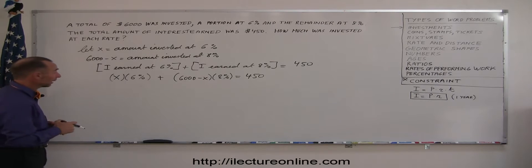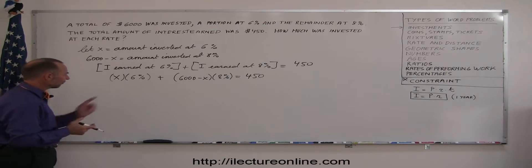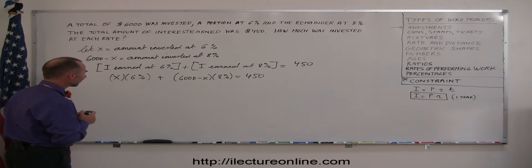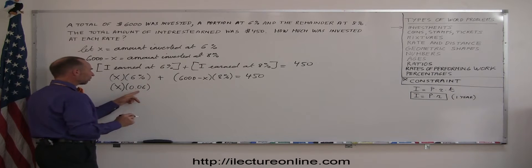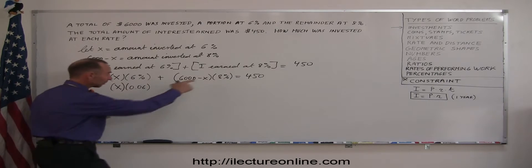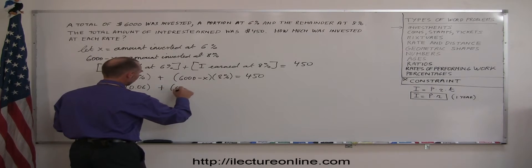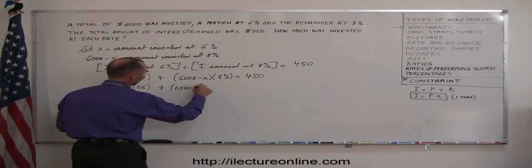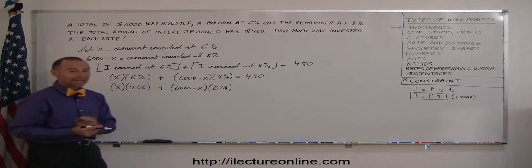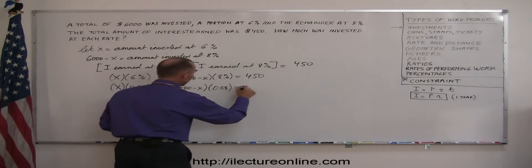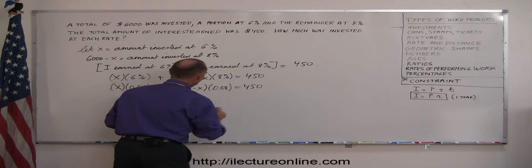Okay, now I'm ready to go ahead and solve this equation. First, I'm going to replace the 6% by its decimal equivalent. So, X times 0.06, that's the decimal equivalent of 6%. I do the same over here. 6,000 minus X times 0.08, that's the decimal equivalent of 8%, and that should add up to $450.